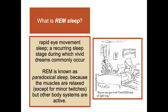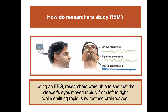What exactly is rapid eye movement sleep? It's a recurring sleep stage during which vivid dreams commonly occur. It's also known as paradoxical sleep because the muscles are relaxed — except for minor twitches — and you're nearly unable to move, but other body systems are active. Researchers using EEG were able to see that the sleeper's eyes moved rapidly from left to right while emitting rapid sawtooth brain waves. You can see those brain wave images here.